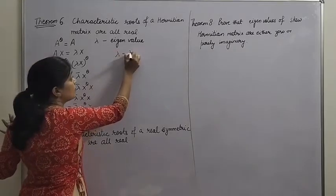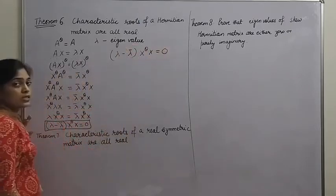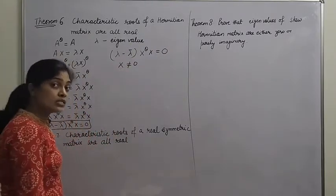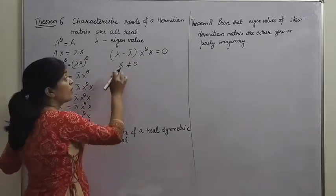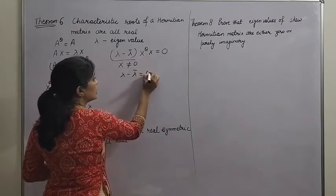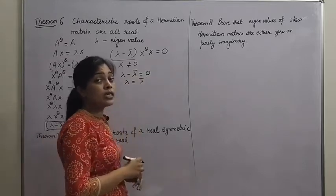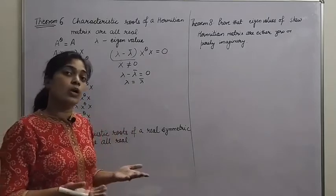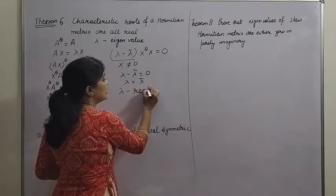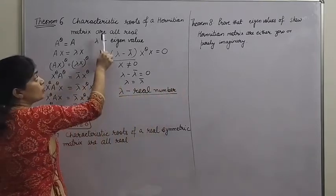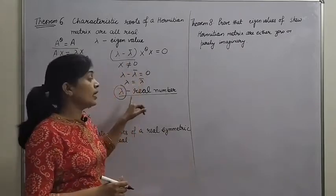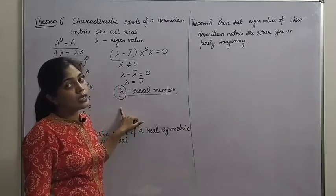Taking the conjugate transpose of both sides of AX = λX gives: (AX)ᴴ = (λX)ᴴ, which means Xᴴ Aᴴ = λ* Xᴴ. Multiplying from the right by X: Xᴴ Aᴴ X = λ* Xᴴ X. Since A is Hermitian, Aᴴ = A, so Xᴴ AX = λ* Xᴴ X. But AX = λX, so substituting: Xᴴ(λX) = λ* Xᴴ X, giving λ Xᴴ X = λ* Xᴴ X, hence (λ - λ*) Xᴴ X = 0. Since X is a non-zero eigenvector, Xᴴ X ≠ 0, so λ - λ* = 0, meaning λ = λ*. Numbers equal to their own conjugate are real, so lambda must be a real number. This proves that eigenvalues of a Hermitian matrix are all real.